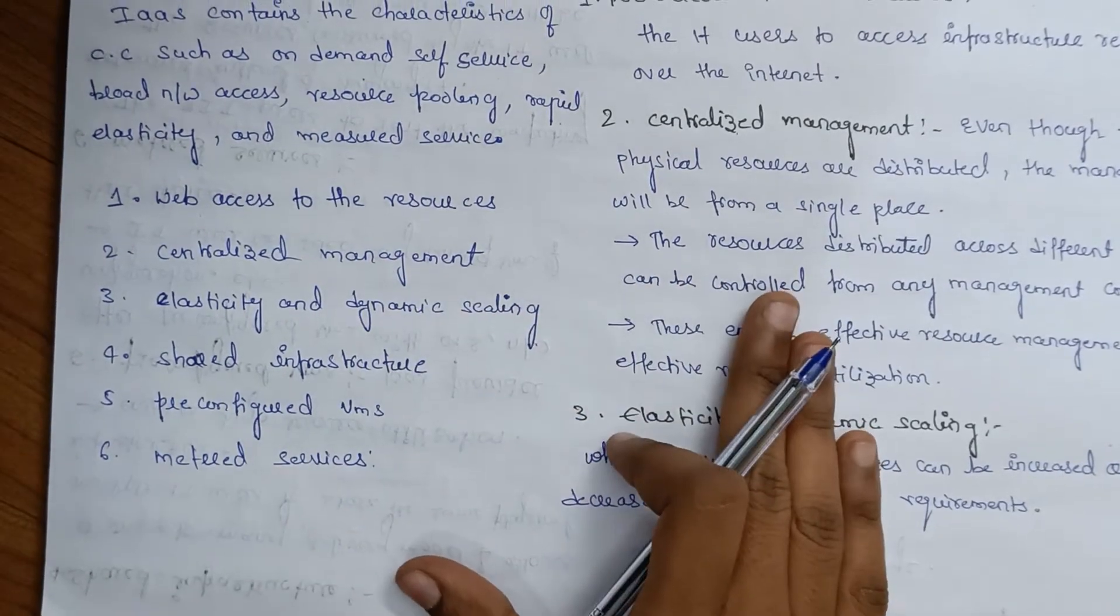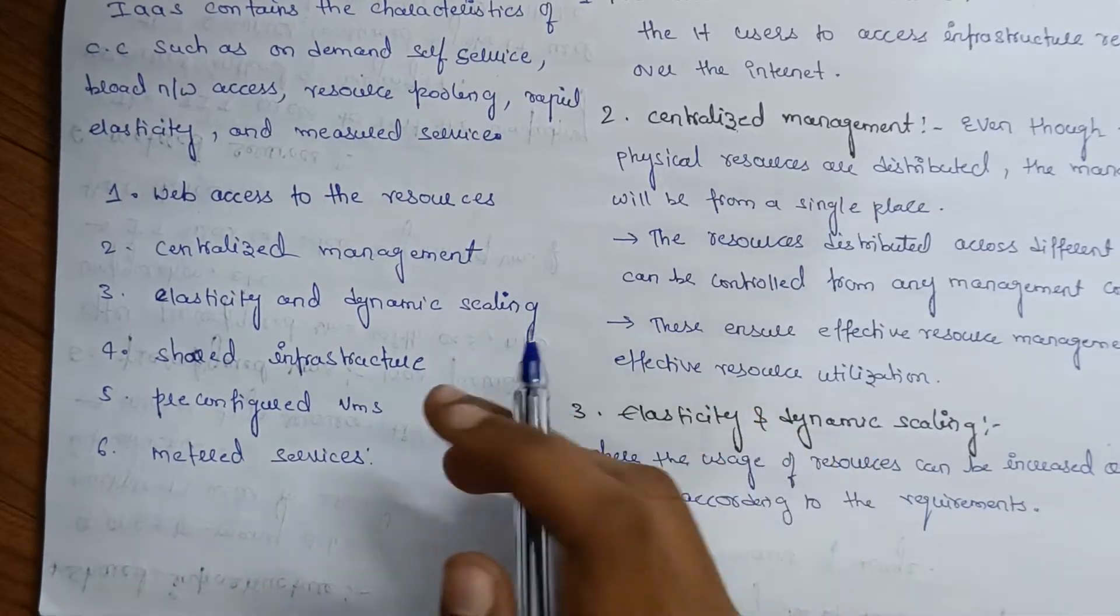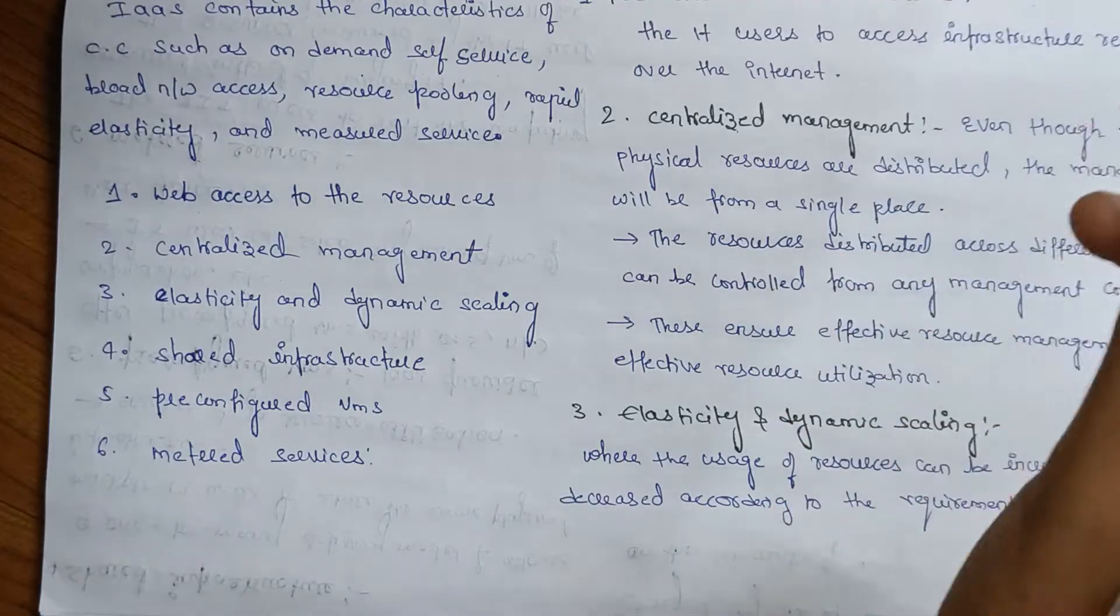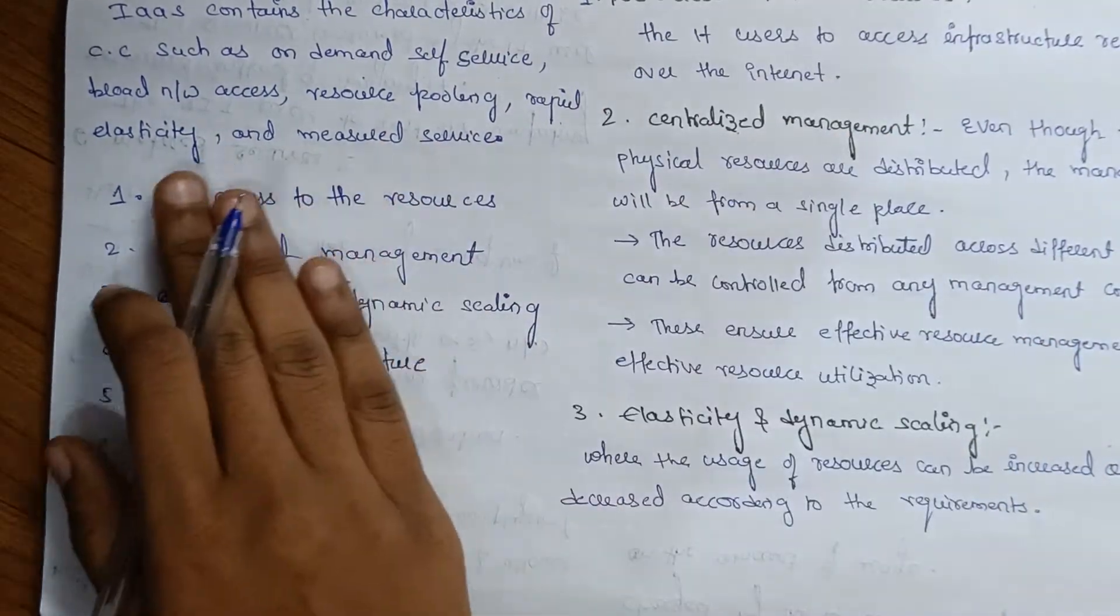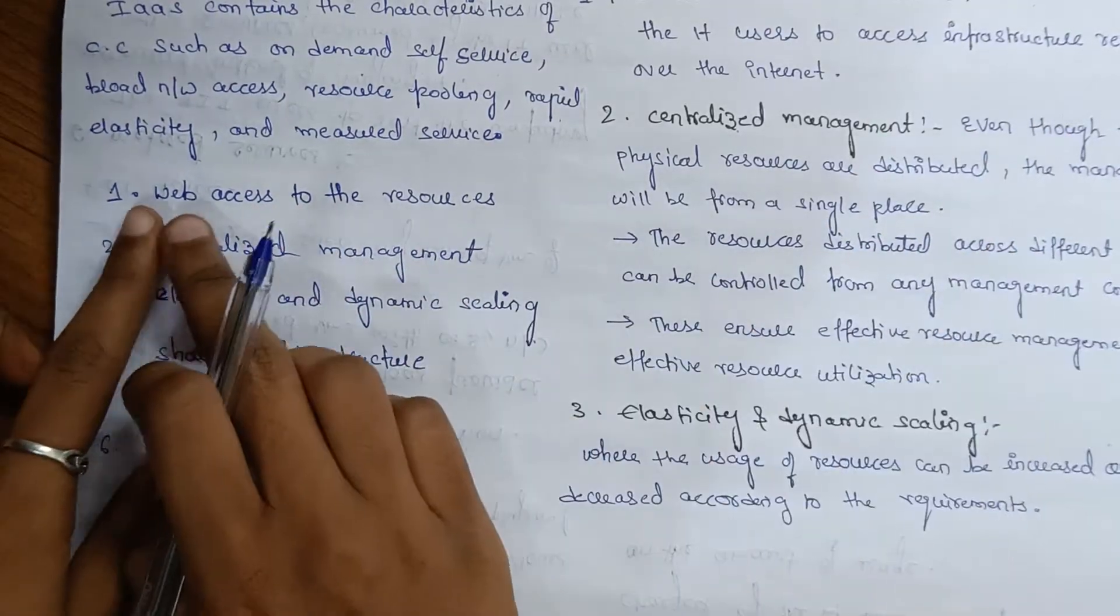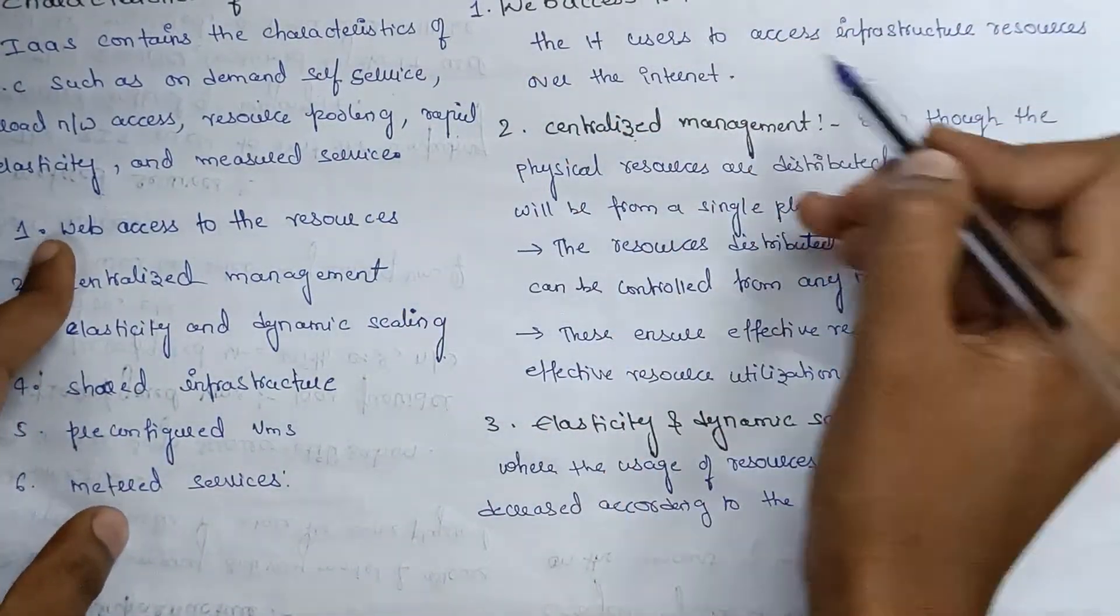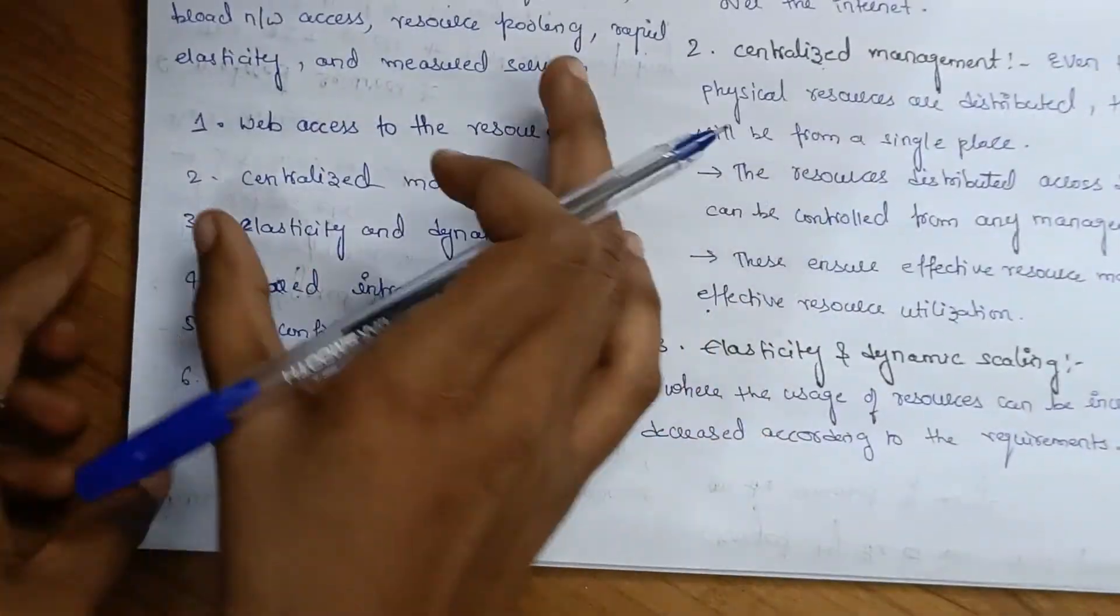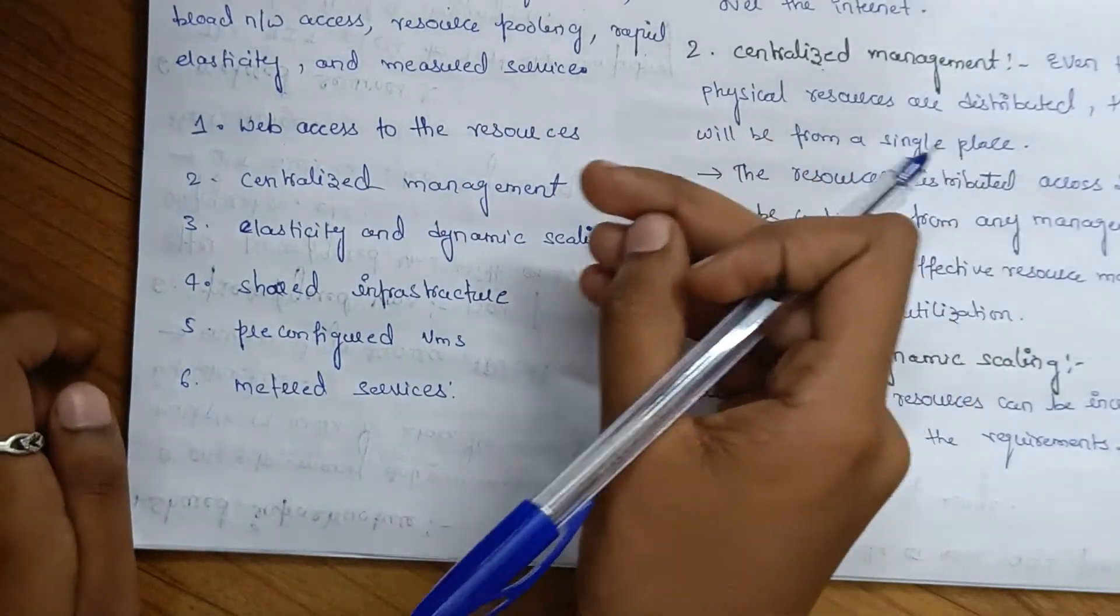These six characteristics can appear in exams as two marks, three marks, or five marks questions. If you're asked to write about characteristics of IaaS, you can write these six points. For two marks, write briefly. For five marks, provide more information about each of these six characteristics.